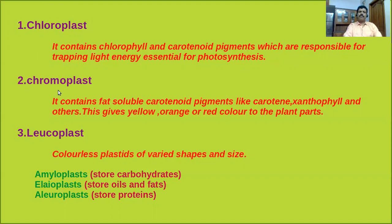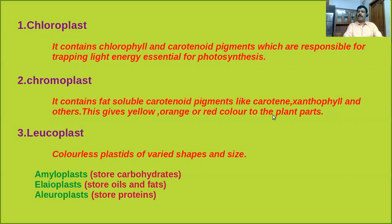The second type of plastid is chromoplasts. Chromoplasts contain fat-soluble carotenoid pigments like carotene, xanthophyll, and others, giving yellow, orange, or red color to plant parts.